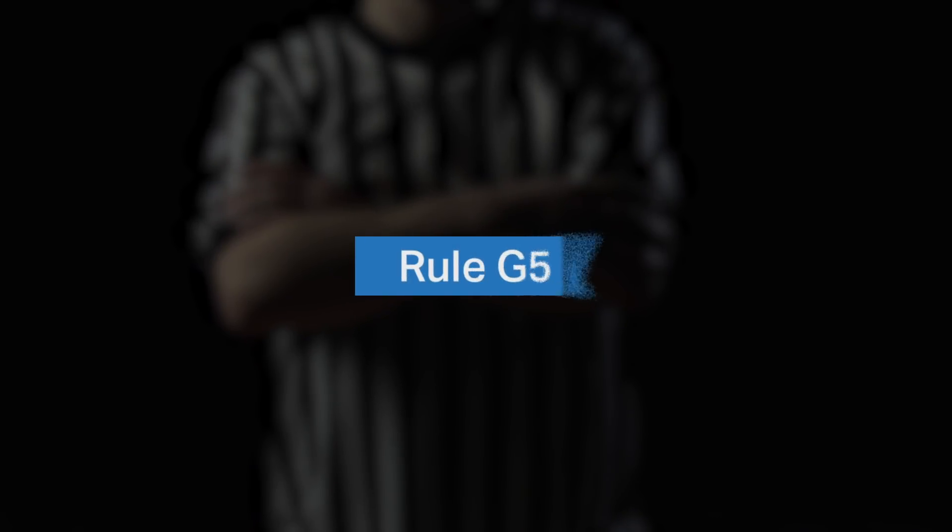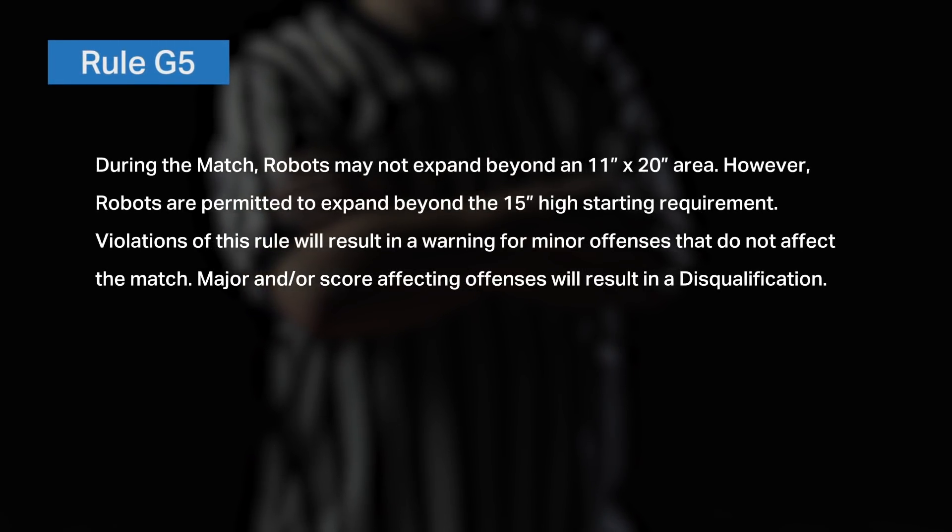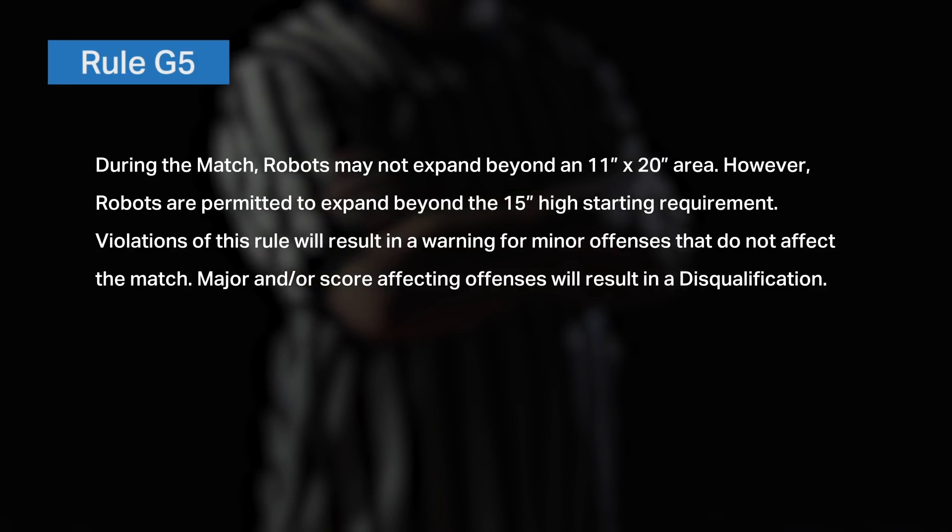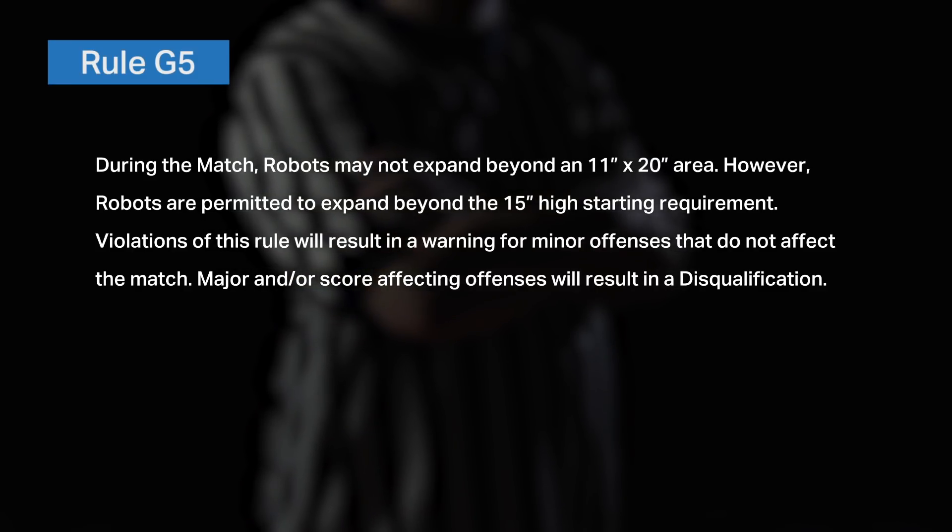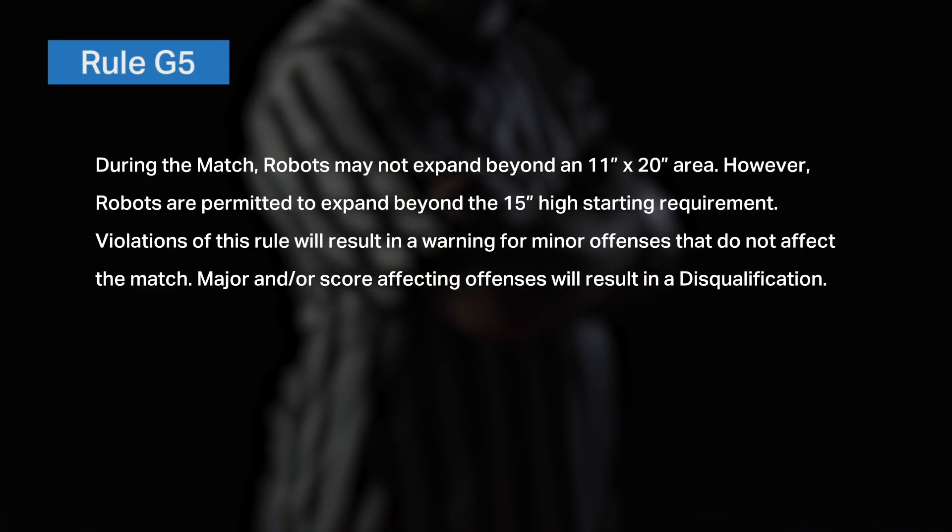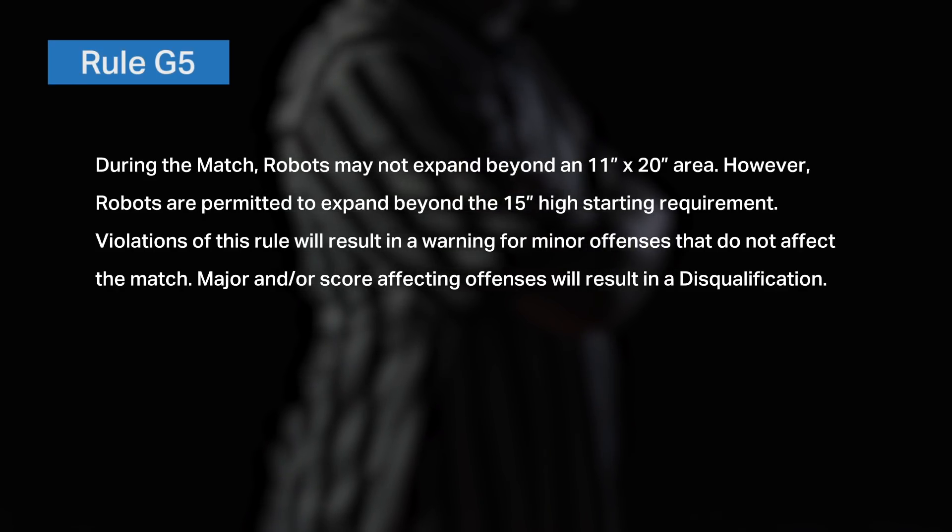Once the match begins, sizing is defined by Rule G5. During the match, robots may not expand beyond an 11 by 20 inch area. However, robots are permitted to expand beyond the 15 inch high starting requirement. Violations of this rule will result in a warning for minor offenses that do not affect the match. Major and/or score affecting offenses will result in a disqualification.